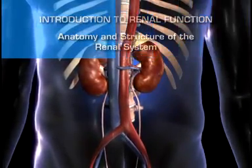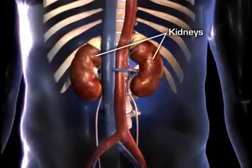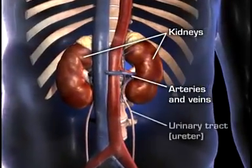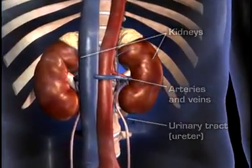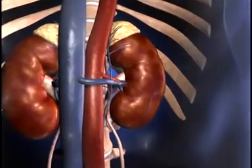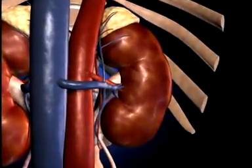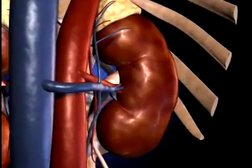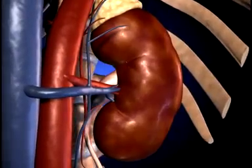The renal system consists of the kidneys, the connecting arteries and veins, and the urinary tract. The kidneys are paired, bean-shaped organs lying outside the peritoneal cavity in the back of the upper abdomen, one on each side of the vertebral column.